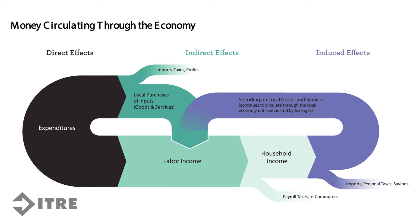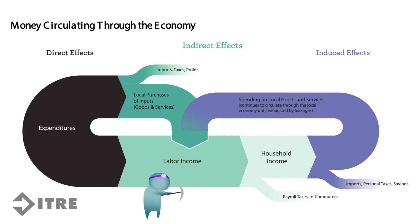As a result of the direct effects, indirect effects manifest themselves in two ways to support the direct business. In one way, money is spent on labor to provide the direct impact, and in another way, money is spent on the local inputs used for the goods or services.